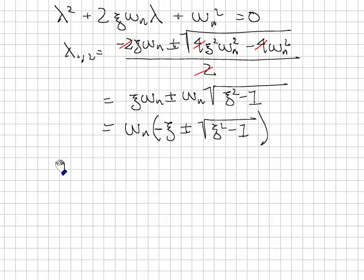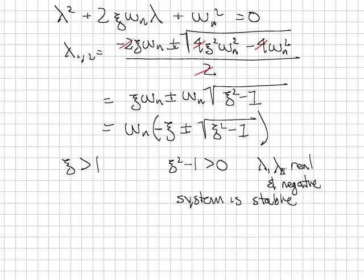Let's look at the possibilities. First, let's look at what happens if ζ is greater than 1. If that's the case, then ζ² - 1 will always be greater than 0, and the √(ζ² - 1) will always be less than ζ. Thus, λ₁, λ₂ will be real and negative.